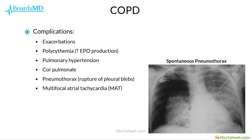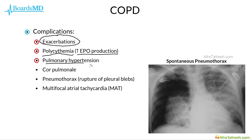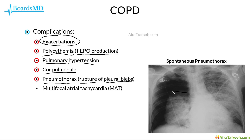COPD has several high-yield complications to keep in mind. COPD exacerbations are of course a major complication. Additionally, patients are at an increased risk for polycythemia secondary to an increase in erythropoietin production. COPD patients are also at increased risk of pulmonary hypertension, which could progress to right heart failure and cor pulmonale, as well as pneumothorax due to rupture of pleural blebs. Patients with COPD are also at increased risk of arrhythmias, including multifocal atrial tachycardia — with COPD and theophylline both being independent risk factors for this arrhythmia.